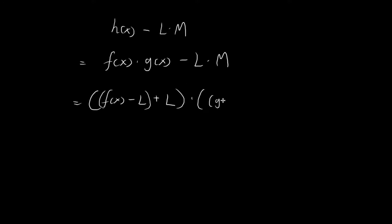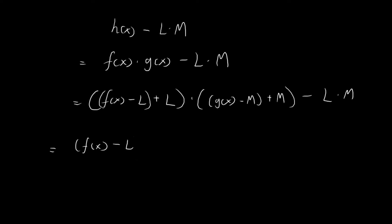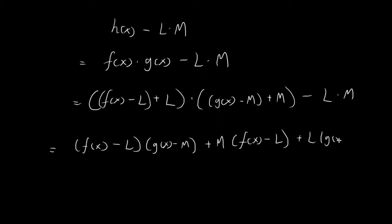We do the same for g(x): subtract and add M so the net effect cancels out. Breaking apart the brackets, we get three terms: (f(x) - L)(g(x) - M), plus M·(f(x) - L), plus L·(g(x) - M), plus LM minus LM. These last two expressions cancel each other out, leaving us with just those three terms.